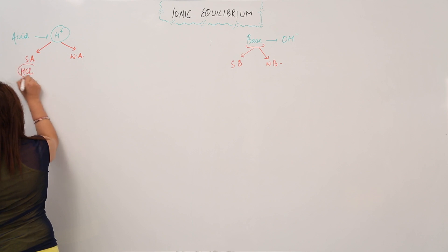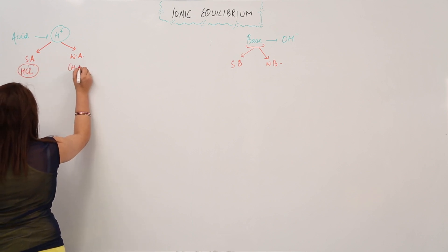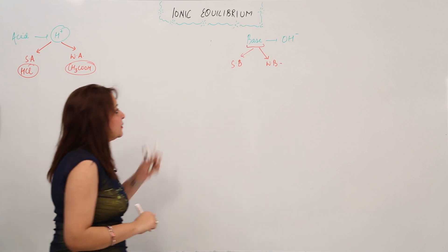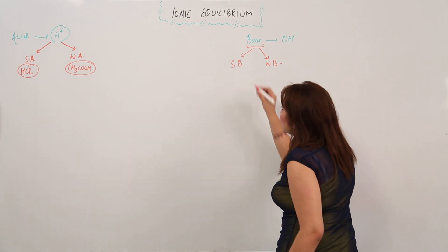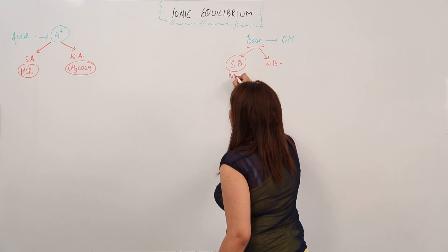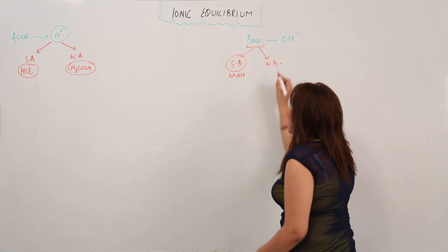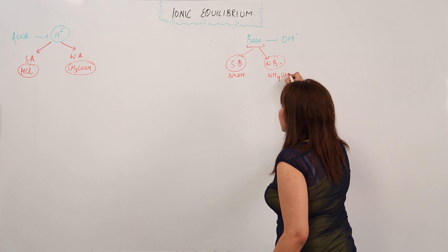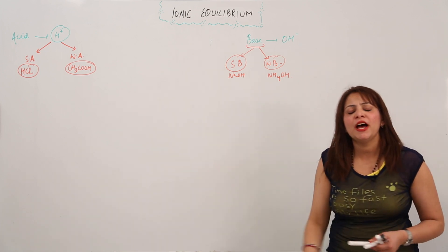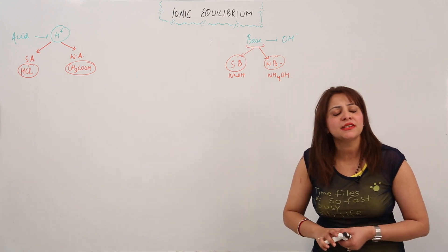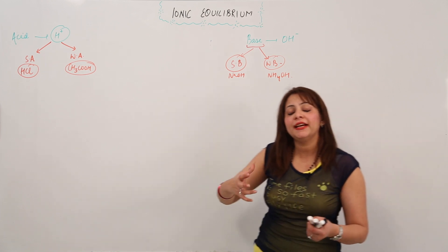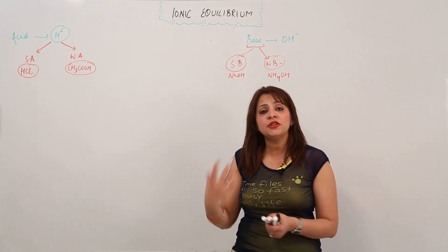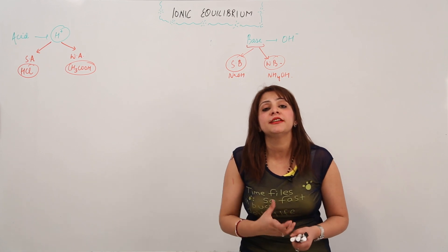HCl is regarded as a strong acid, whereas acetic acid is regarded as a weak acid. Similarly, NaOH is a strong base and NH₄OH is a weak base. We have many more examples, considering their dissociation — if they are completely dissociated, they are strong; otherwise, when they are partially dissociated, they are considered to be weak.